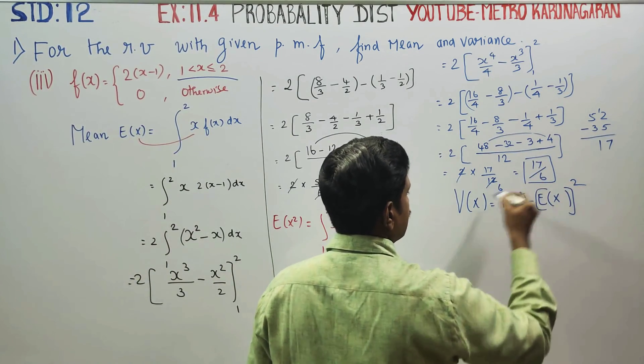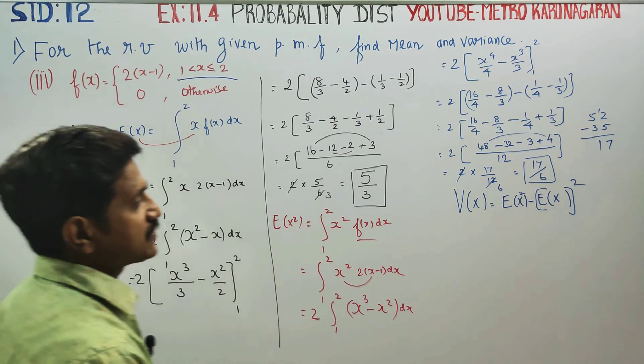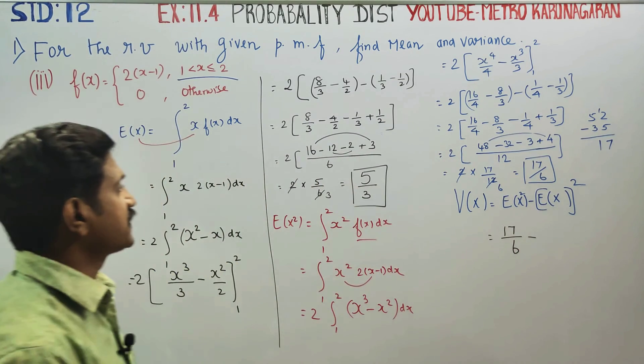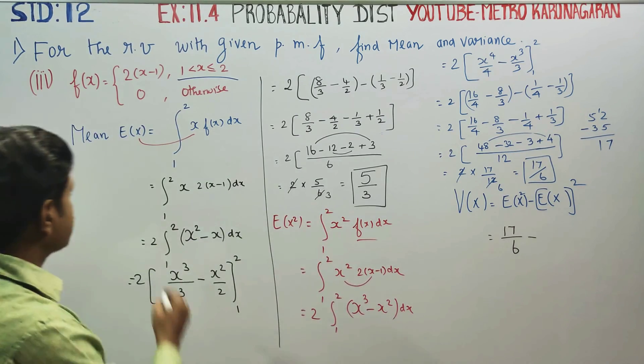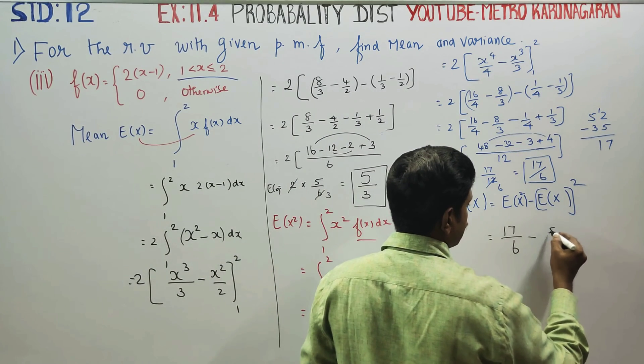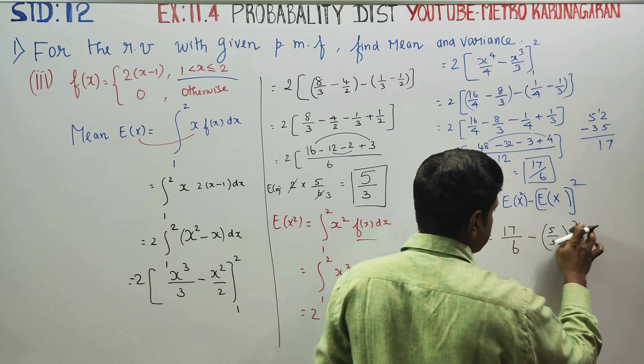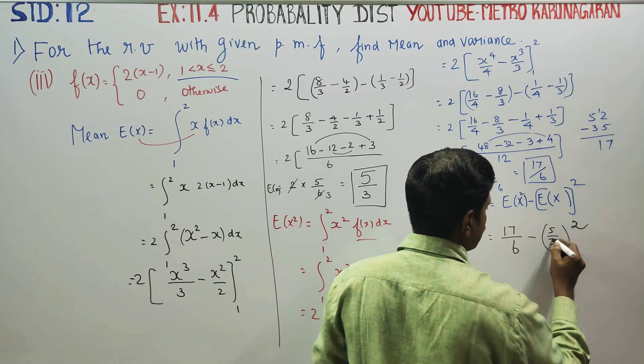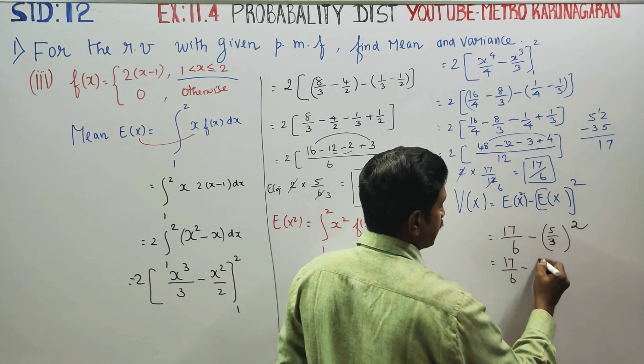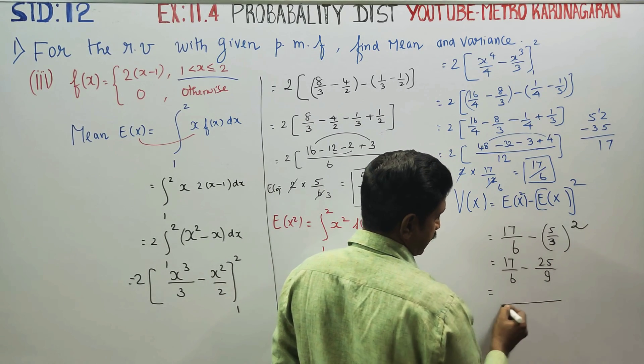V of x formula: we have to substitute. Expectation of x square is 17 by 6 minus E of x squared, which is 5 by 3 whole square. 5 by 3 whole square equals 17 by 6 minus 25 by 9. LCM of 6 and 9 is 18.